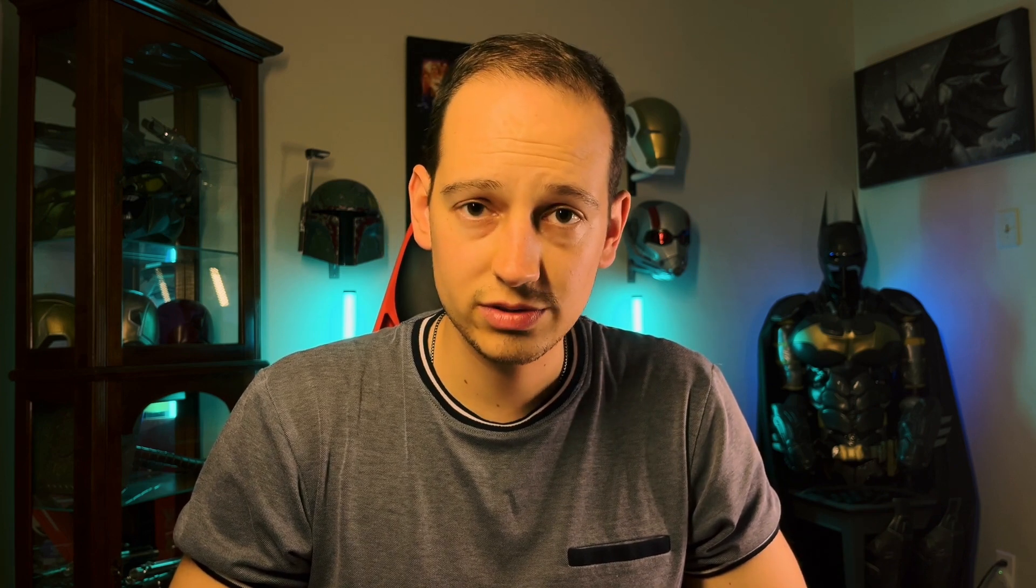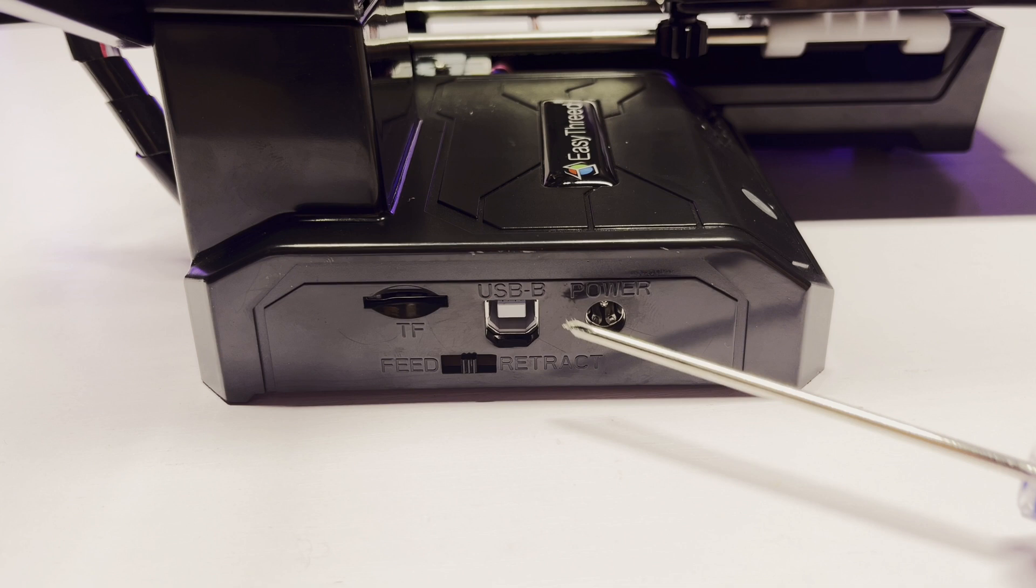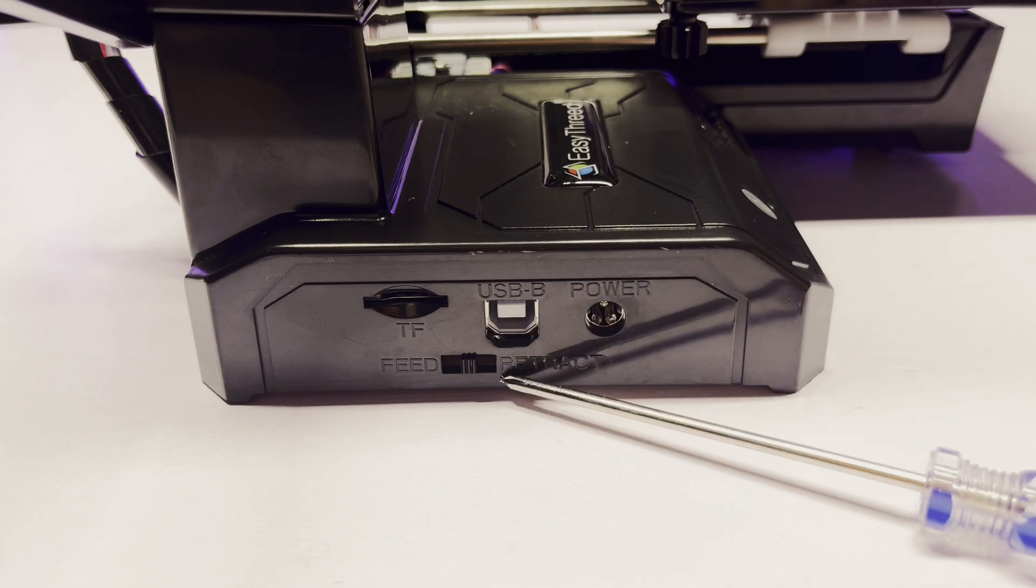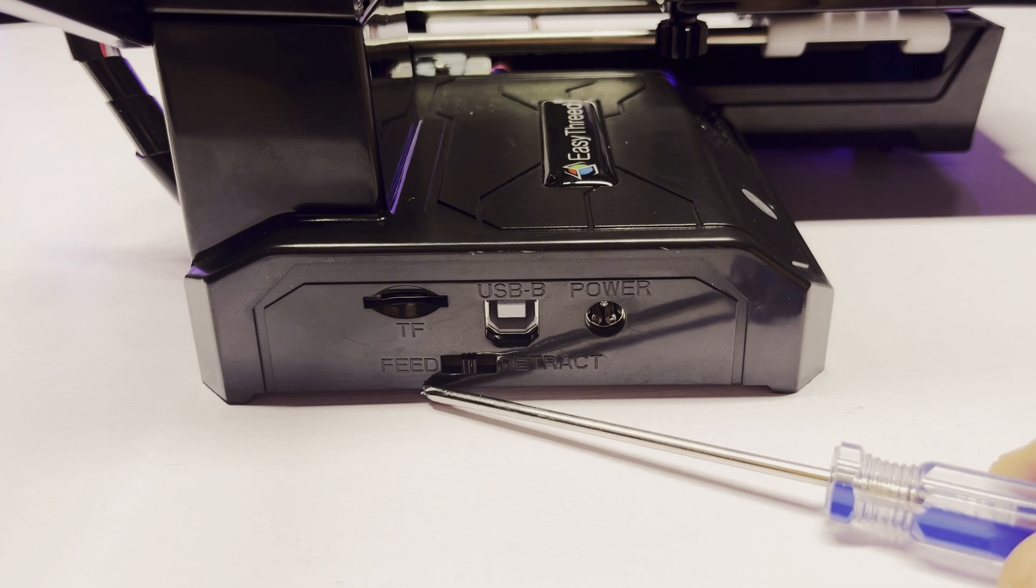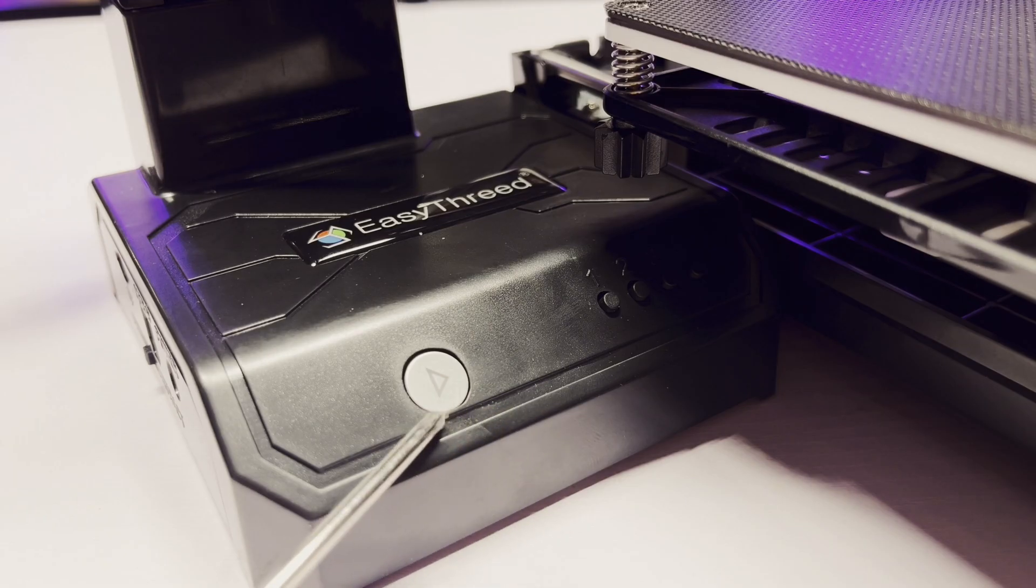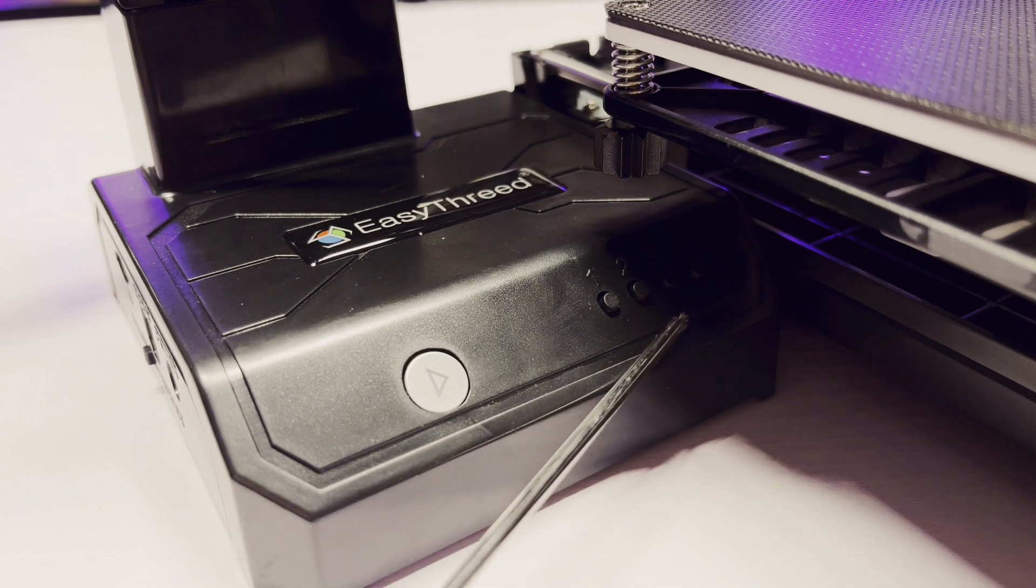Before I plug this in and level the print bed, let's go over the controls. On the side of the printer, there is a hole for the power supply, a USB B cord, a feed and retraction switch for loading filament, and a slot for a TF card. The front of the printer has the print button, and then four extra buttons for leveling the print bed.